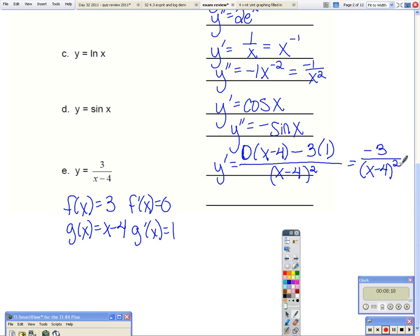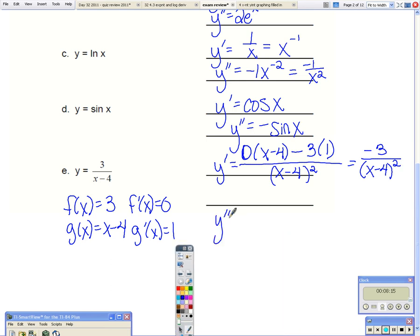So to find the second derivative, we need to use the quotient rule again with our first derivative. So solving that, the bottom times the derivative of the top, minus the top times the derivative of the bottom. I'm going to use the power rule all over the bottom squared.